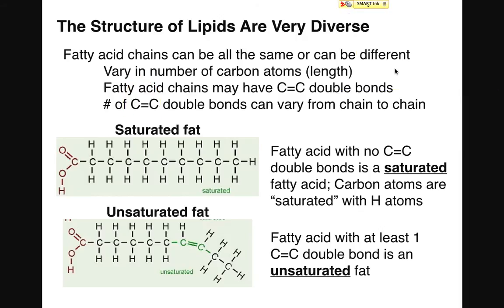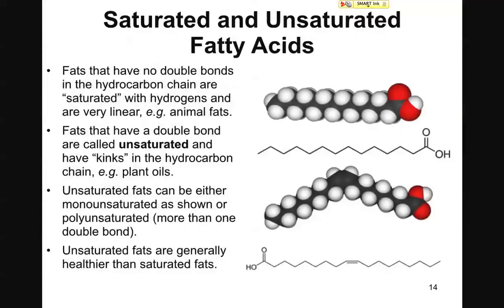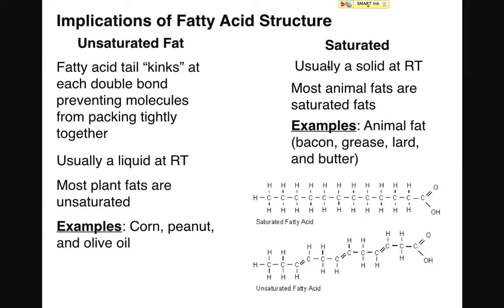Why do we care about saturated fats and unsaturated fats and the presence or absence of carbon-carbon double bonds? It turns out that saturated fatty acids have a linear structure — all of those carbon atoms are lined up in what approximates a pretty close to a straight line. In contrast, unsaturated fats, because of the carbon-carbon double bond, have bends or kinks in the shape of the molecule. These kinks prevent the fatty acid molecules from stacking tightly together. So while saturated fatty acids can stack tightly together, unsaturated fats can't. As a result, saturated fats tend to be solids at room temperature because of that ability to stack tightly.